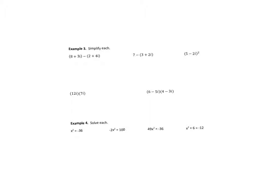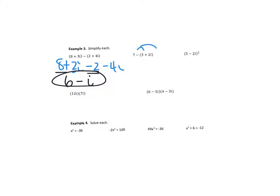You can also simplify operations with i. For the first one, I'm going to distribute the negative through the second part, just like you would with a polynomial with x. The terms in there become opposite in sign. Then you write the real part first, so the answer is 6 minus i. For the second one, distribute the negative: it's going to be 7 minus 3 minus 2i. Combine like terms and write the real part first: 4 minus 2i.